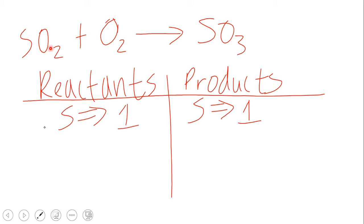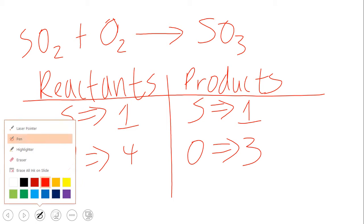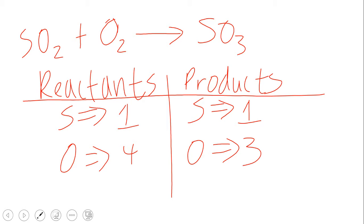For oxygen on the reactant side, we have two oxygen from SO₂ and another two from O₂, so that gives four total. Whereas oxygen on the product side is only three. So we have a problem with our oxygens — we have four on the reactant side but we want three. This is two and this is two, so that makes four. But we want three.